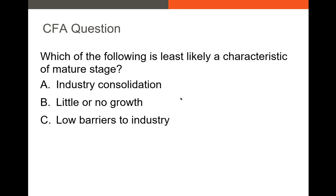Let's try a CFA question: which of the following is least likely a characteristic of a mature stage? A. Industry consolidation; B. Little or no growth; C. Low barriers to industry entry. The answer is C. In a mature stage, companies tend to be very efficient, making it very hard for new entrants to compete. At the same time, there's typically a lot of consolidation as firms seek synergies by combining with competitors or suppliers to reduce costs. And of course, in a mature stage, there's typically very little or no growth.